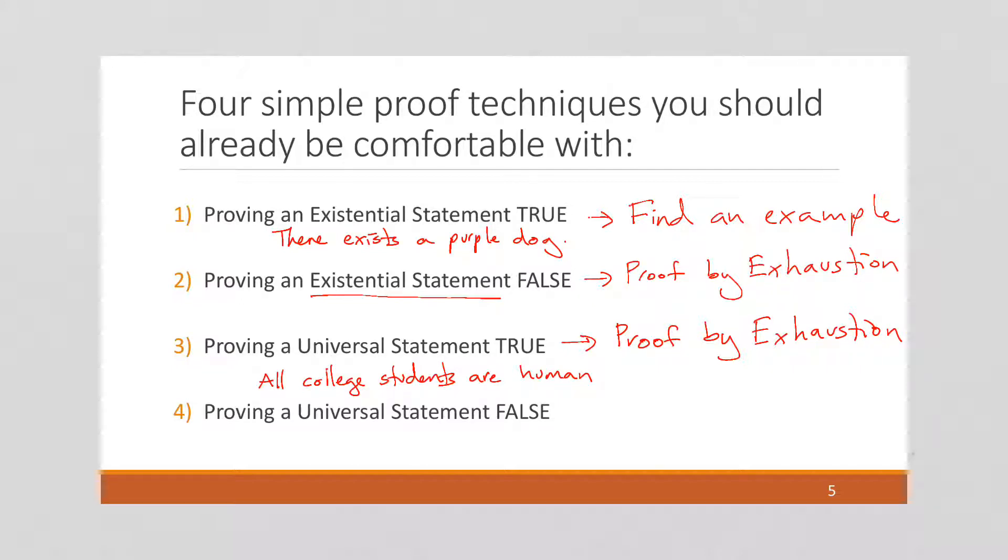To prove a universal statement false, all I have to do is find a counterexample. And it turns out I read an article recently about a service dog that was granted a college degree because he was there for every step of the way of his human college experience. And so this would be a counterexample to the statement that all college students are human.